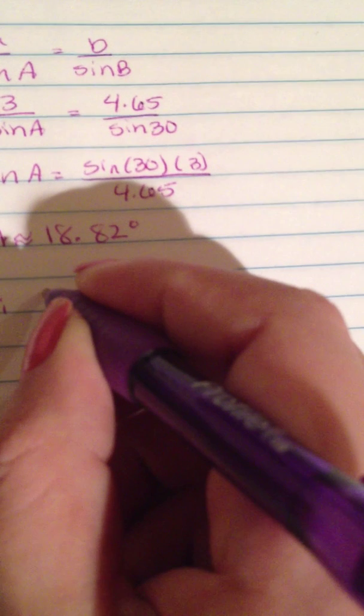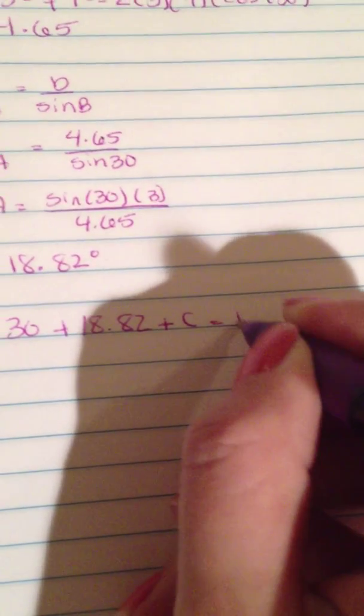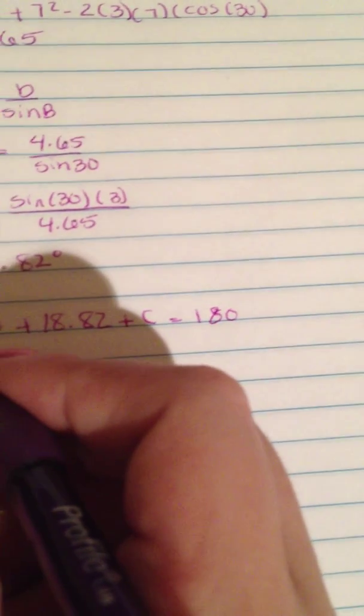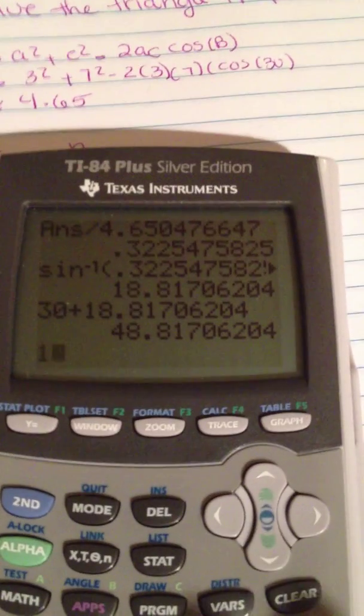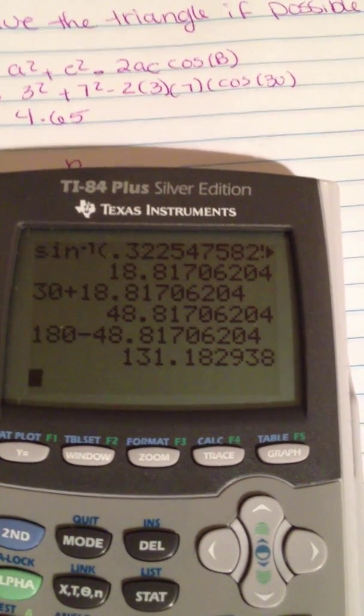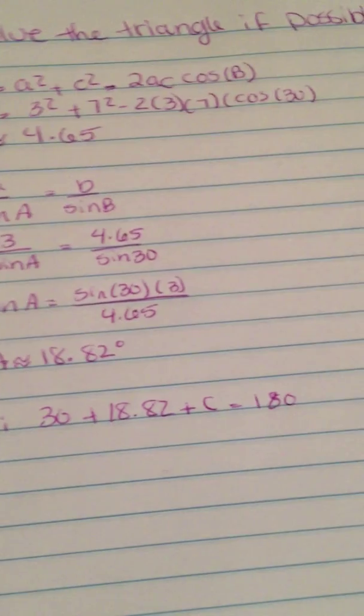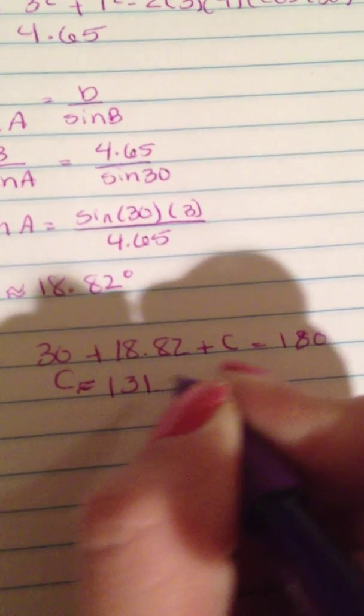I have angle A and angle B, so I still need angle C. All the angles add up to 180°, so 30° + 18.82° + C = 180°. So 30 plus 18.82, then 180 minus that answer, it's about 131.18°. So C equals about 131.18°.